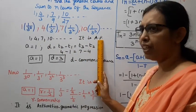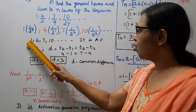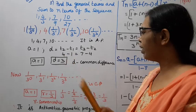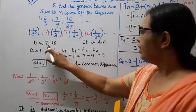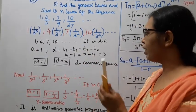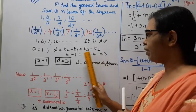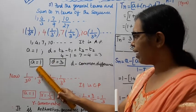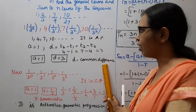The numerators 1, 4, 7, 10 form an AP. T2 − T1 = 4 − 1 = 3, and T3 − T2 = 7 − 4 = 3. Since the differences are the same, it is AP. So a = 1 and d = 3.